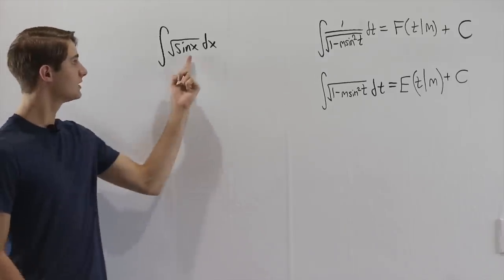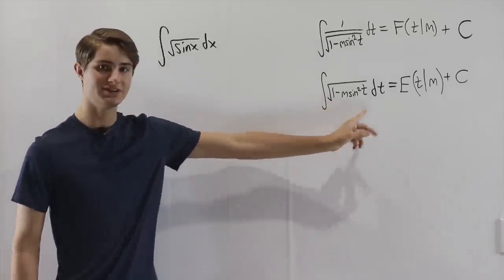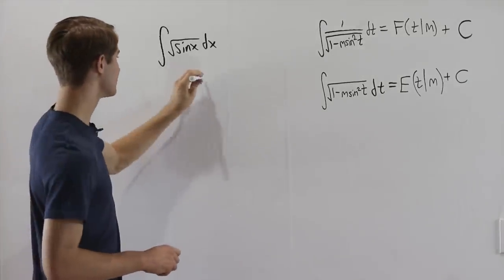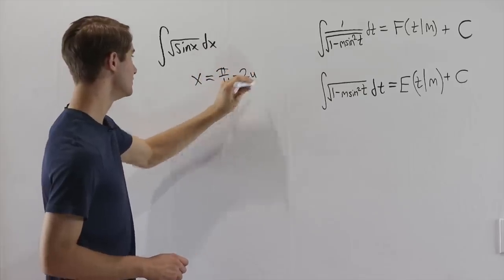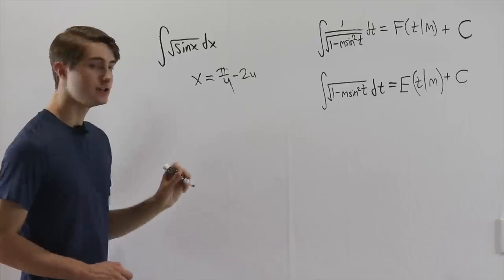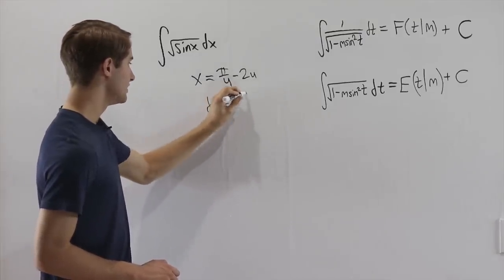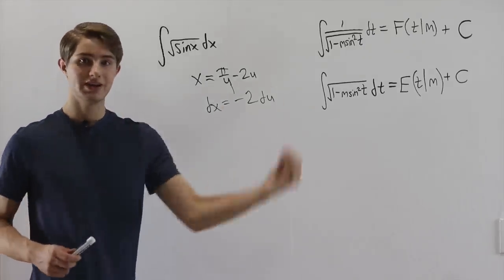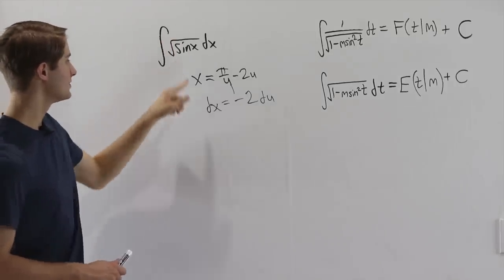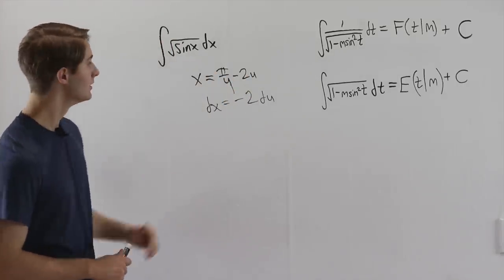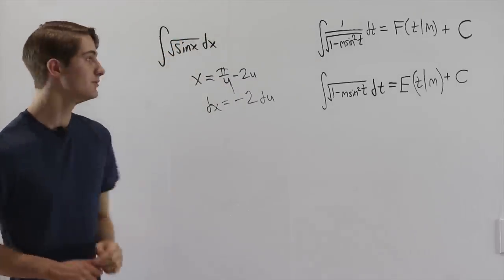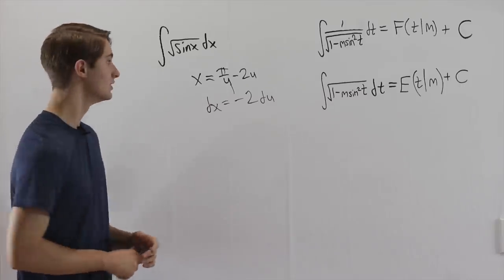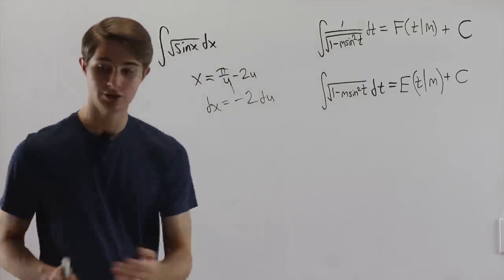because we see the square root of a trig function in the numerator right here, it looks like the elliptic integral is going to work the best. Now, we want to start thinking about how we can transform this sine into 1 minus m sine squared of something. Maybe you first think to use a substitution, so if we think of some random substitution like x equals pi over 4 minus 2u, where u is our new variable, this might be a useful substitution, because when we differentiate, we get the dx equals negative 2 du.